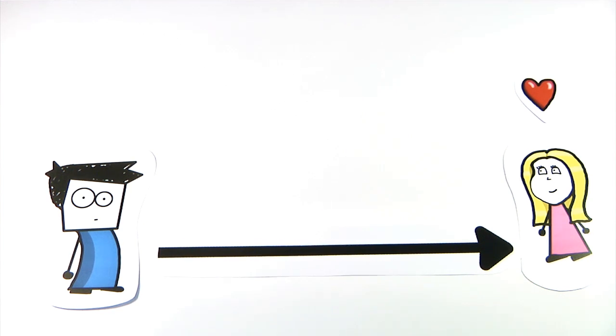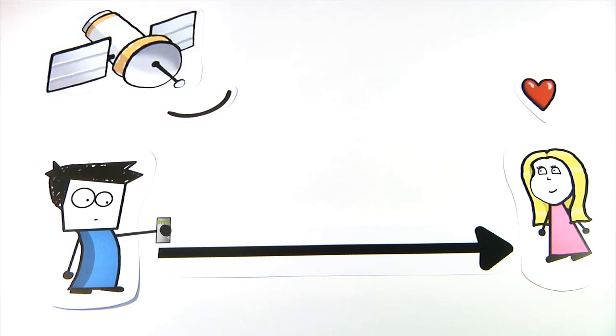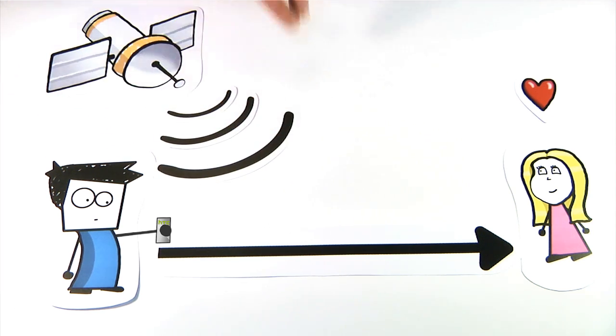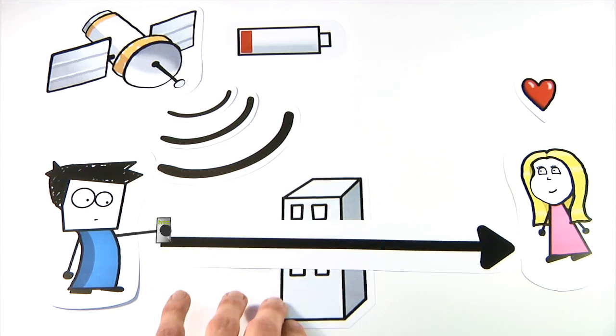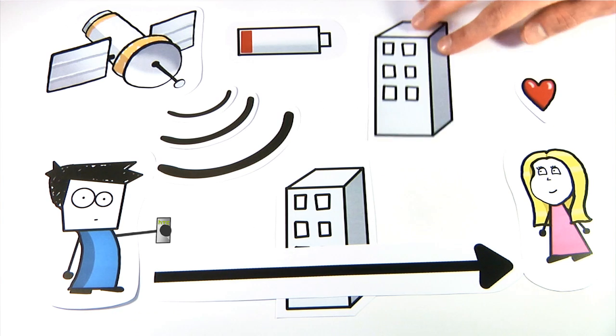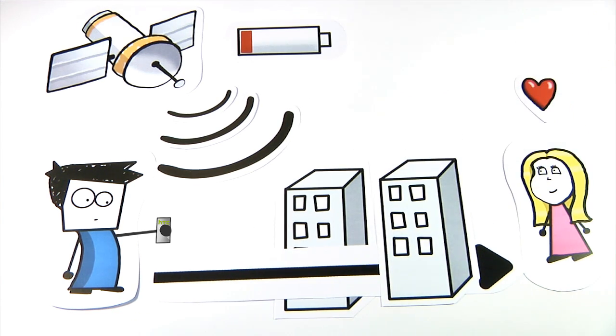And he decides to use his smartphone to navigate to her. Like every other navigation system, his smartphone can only locate his position by using GPS. But GPS has some disadvantages. It consumes a lot of energy. So Tom's battery runs low pretty fast. And in some areas, like between those high buildings, he may lose GPS signal.